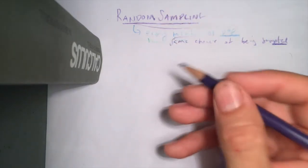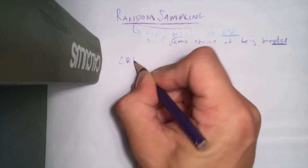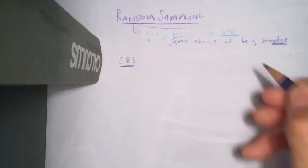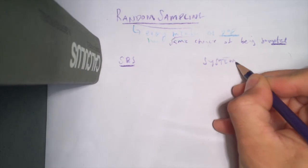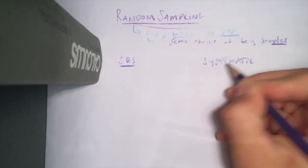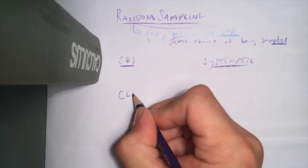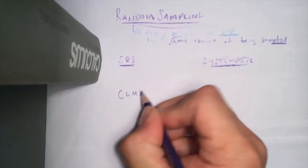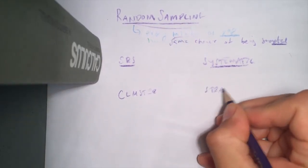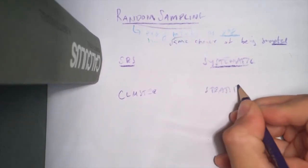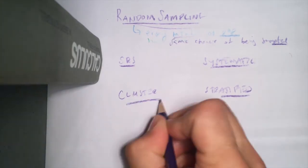The four techniques we're going to talk about are: the SRS — the Simple Random Sample — a systematic sample, a cluster sampling, and a stratified sampling. Let's go through these.